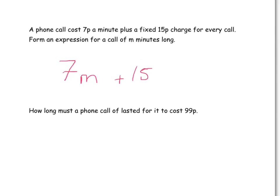Now in the second part, how long must a phone call have lasted for it to cost 99p? So our expression we just found, we now know it's going to cost us 99p. So we're going to turn our expression into an equation by setting it equal to 99p. Now we can work backwards to find out how many minutes this call must be.